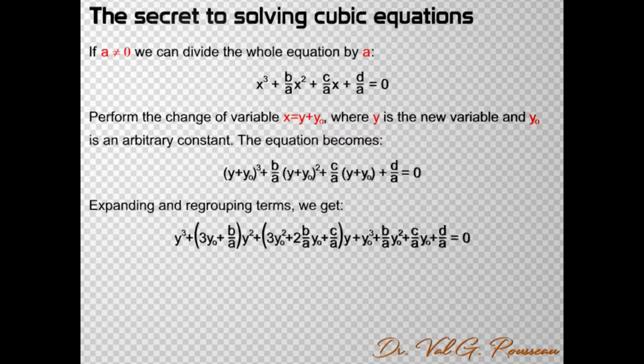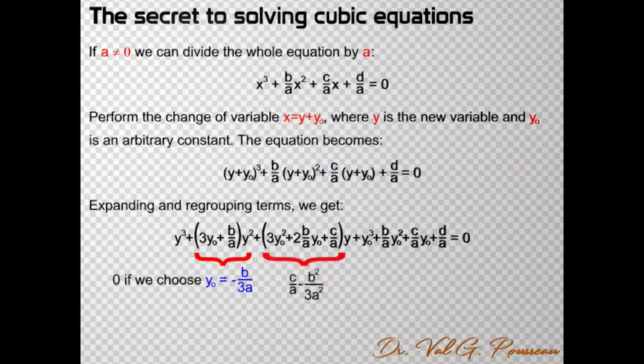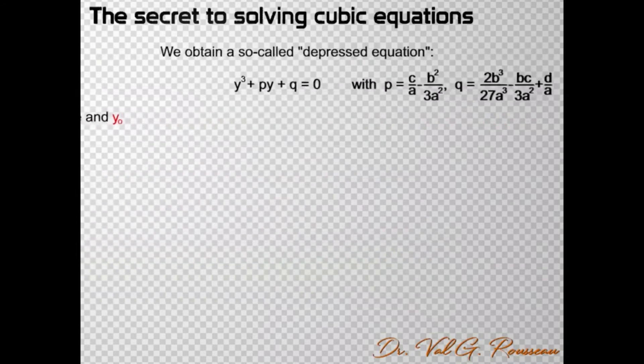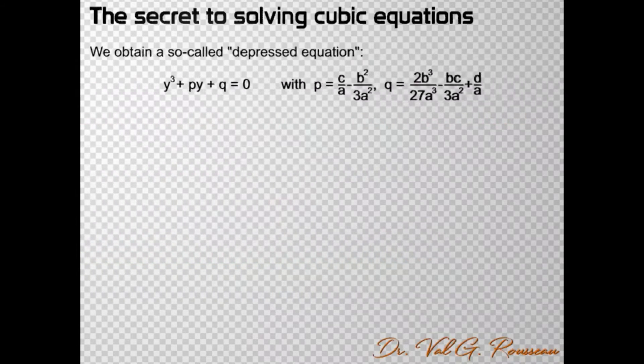And here comes a first simplification. We can choose the value that we want for y₀. So, we can get rid of the quadratic term by choosing the value y₀ = -b/3a. Of course, since we made a choice for y₀, we must substitute the same value in the other terms. So, if we clean up a little bit, we can rewrite our general cubic equation as a so-called depressed cubic equation that doesn't have any quadratic term.